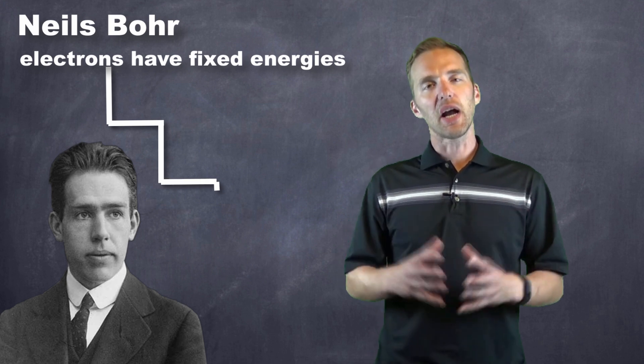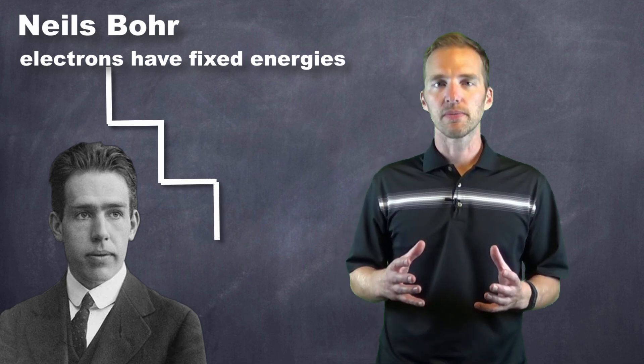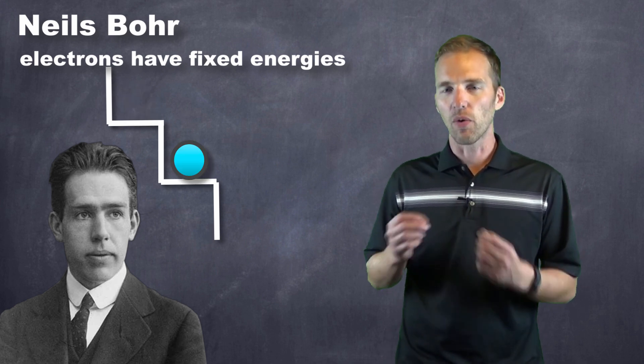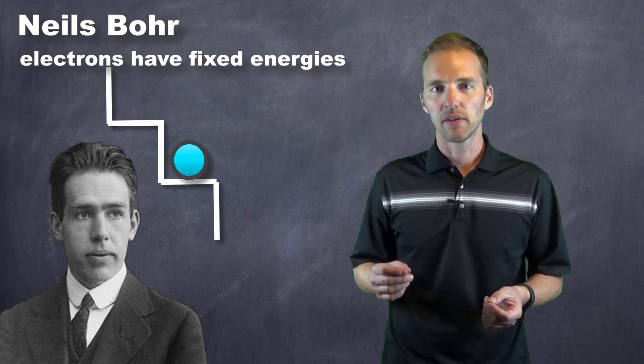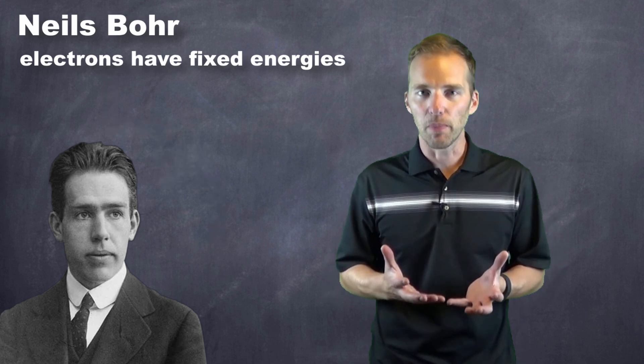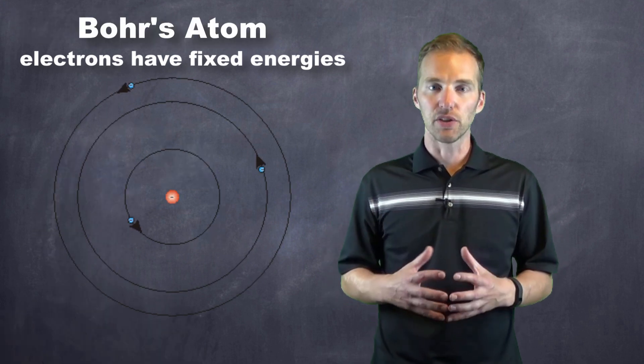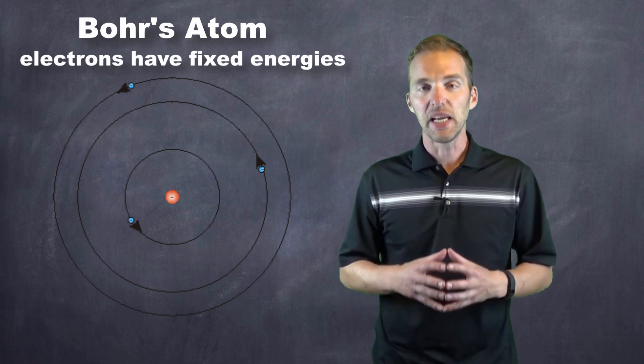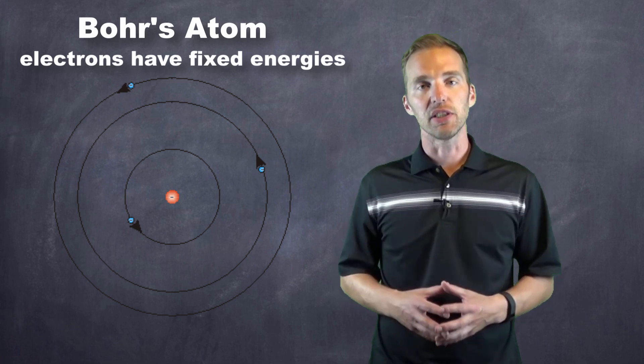Now, you can envision it kind of like a set of stairs. This ball representing an electron can only be on one stair or another, never in between. And in that way, the electrons could maintain their momentum and not go spiraling into the nucleus if they have to be and can only be found in these specific and set energy levels.